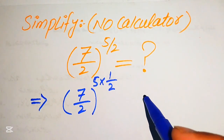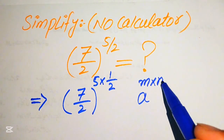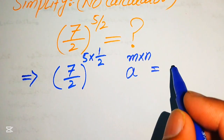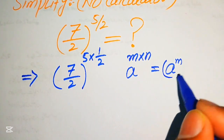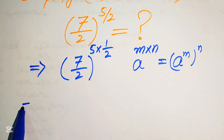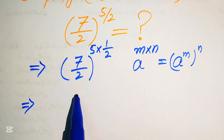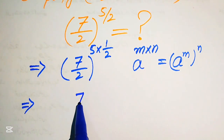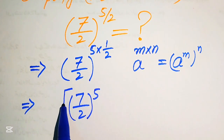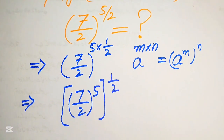We use the exponent law: a to the power of m multiplied by n equals a to the power of m, to the power of n. According to this law, we move the 5 inside the term and write it as (7 over 2) to the power of 5, with the whole exponent being 1 over 2.